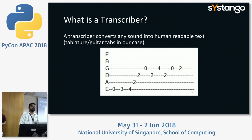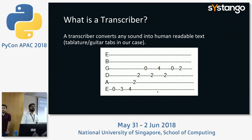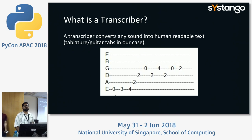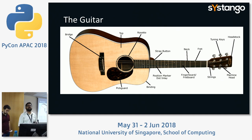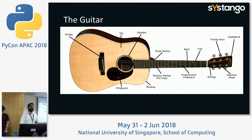These horizontal lines represent strings and these numbers represent frets. If a position is like E0, that means no fret is pressed — zero is when no fret is pressed. Fret counting starts from number one. If you talk about E3, that is the position where you press the string to hear a different sound. That's how tablatures are read.